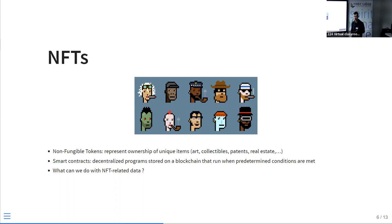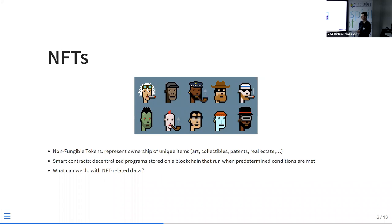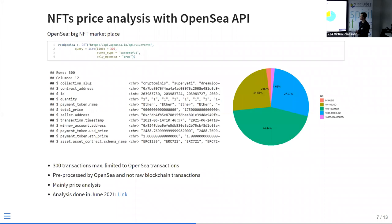For example, in an NFT auction, someone wants to sell their crypto and other players can bid. When the asking price is reached, the software automatically takes the money from the buyer and sends the NFT to them. The advantage is that there's no intermediary — no one can say 'I don't have the money' or 'I don't have the NFT.' So what can we do with NFT-related data? That's the first example: a price analysis using the OpenSea API.